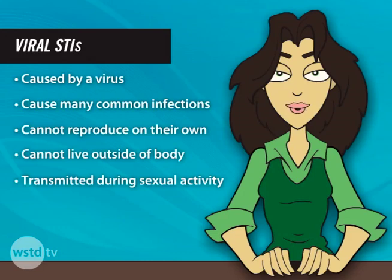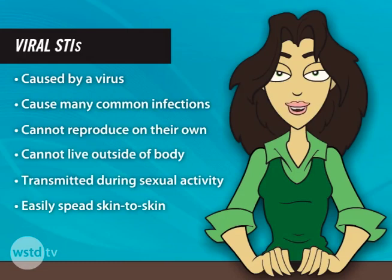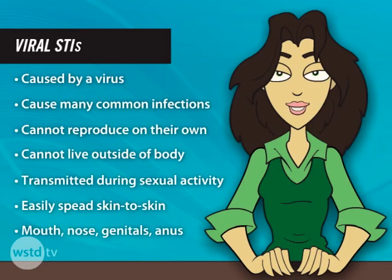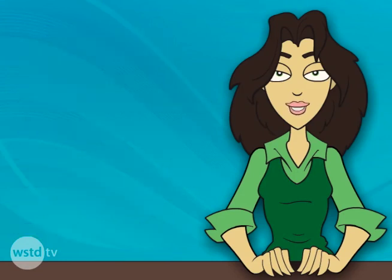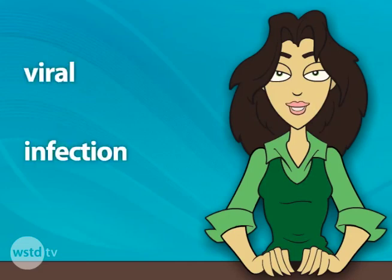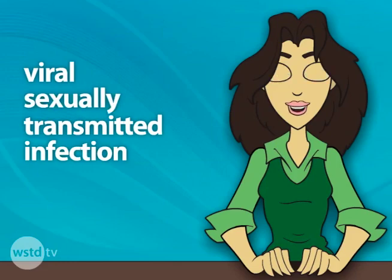Viruses are also big fans of skin-to-skin contact. If someone has an infected sore or pimple and that sore touches your skin, like when getting close during sex — whammo again! The virus can make its move. Viruses are especially fond of mucous membranes in and around the mouth, nose, genitals, and anus. These have larger pores and allow the bad guys to enter the body more easily. So, viral sexually transmitted infections are infections caused by viruses that are transmitted through sexual contact.